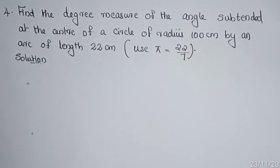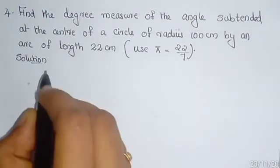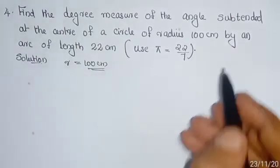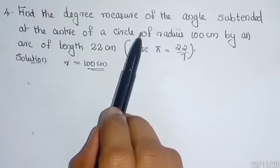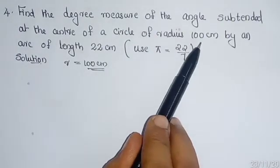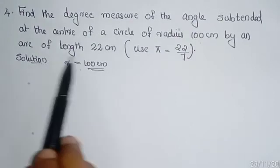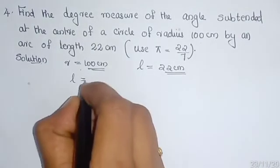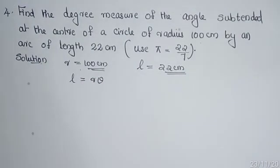For question 10: find the degree measure of the angle subtended at the center of a circle of radius 100 centimeters by an arc of length 22 centimeters. Use π = 22/7. Here, R equals the radius, which is 100 centimeters, and the arc length L equals 22 centimeters. We know the equation L = Rθ. We want to find the angle θ.